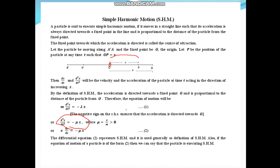If you have to prove that a particle is performing simple harmonic motion, you have to show that d²x/dt² = −μx for some positive constant μ. Also, d²x/dt² can be written as v·dv/dx. Both these forms of the differential equation represent SHM and are generally used as the definition of SHM.